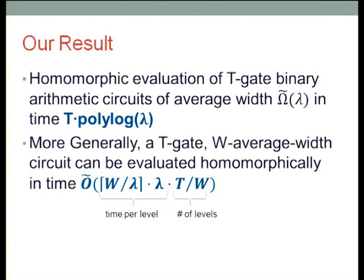The result we have in this paper is a more efficient way of doing things that lets you reduce the ciphertext. In particular, in some cases you can get overhead which is only polylogarithmic in your security parameter, as long as the original circuit you were trying to evaluate is wide enough. The approach is based on batching and packing many bits inside a single ciphertext. If your circuit is wide enough so you have enough bits to pack in a single ciphertext, you can really decrease the overhead to polylogarithmic.